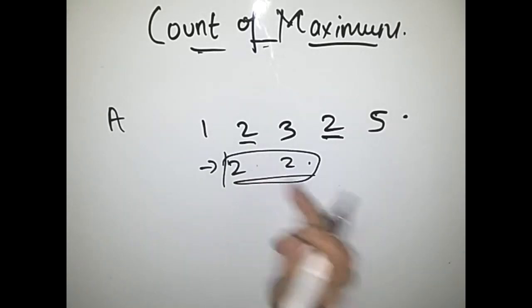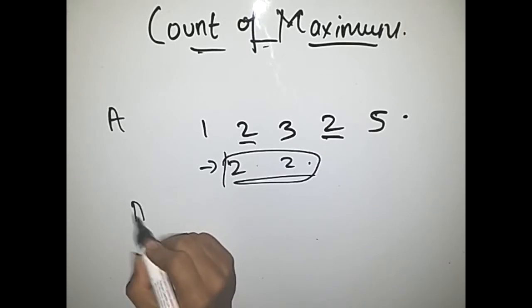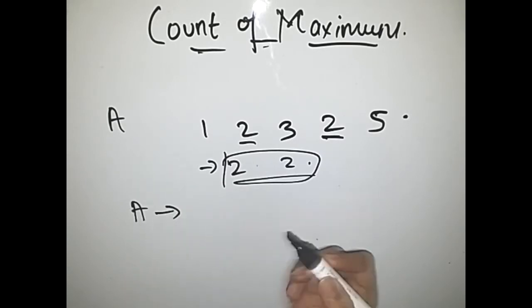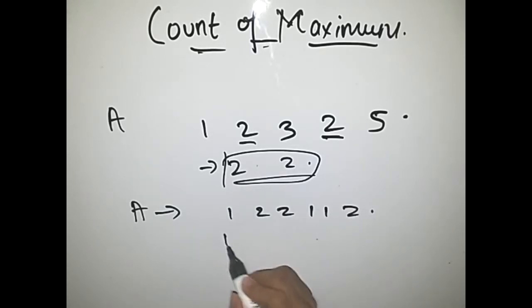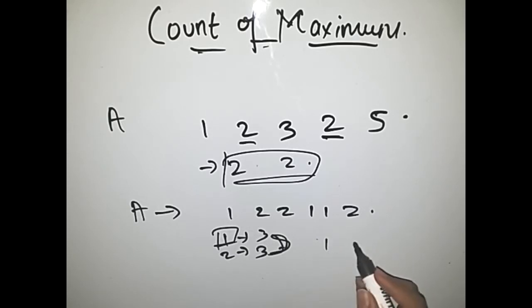If our input is 1 2 2 1 1 2, now 1 is repeating itself 3 times and 2 is repeating itself 3 times. So as there is a clash between both elements, it's clearly specified in the problem that we have to print the number which has a lesser value, that is 1. That's why our answer should be 1 space 3.